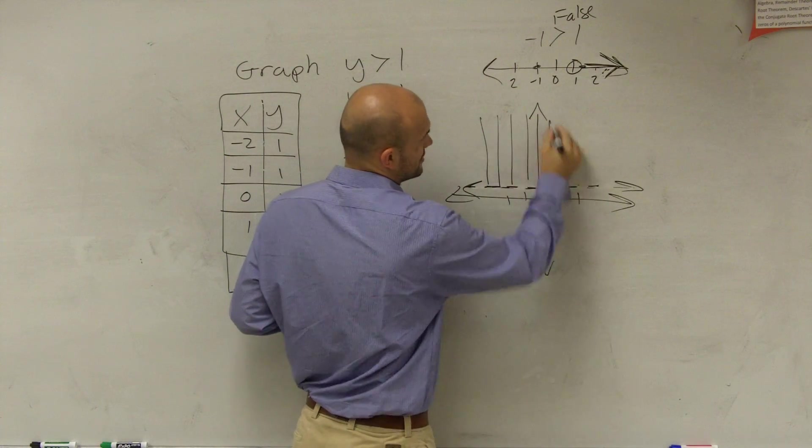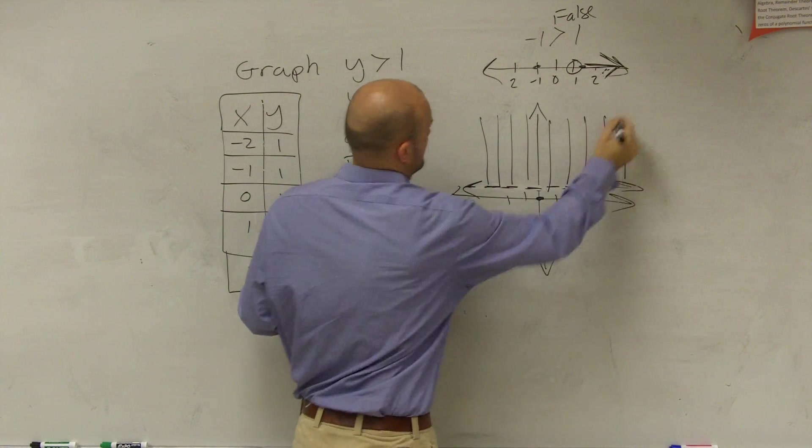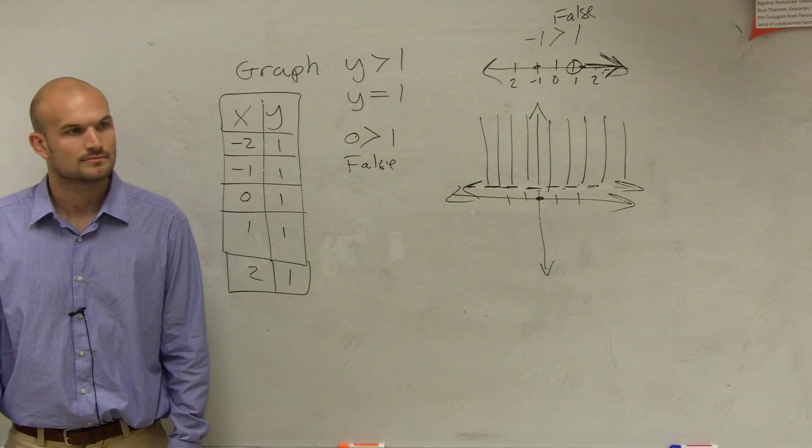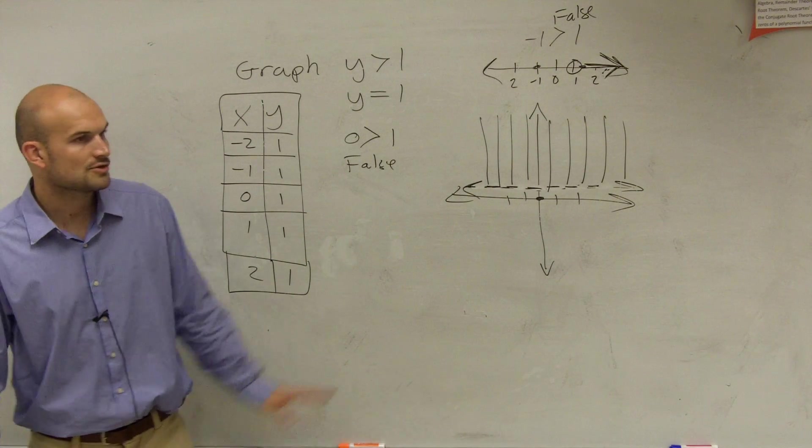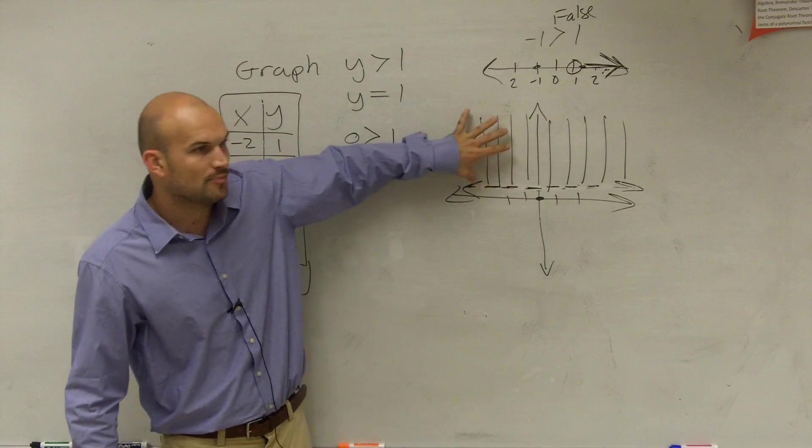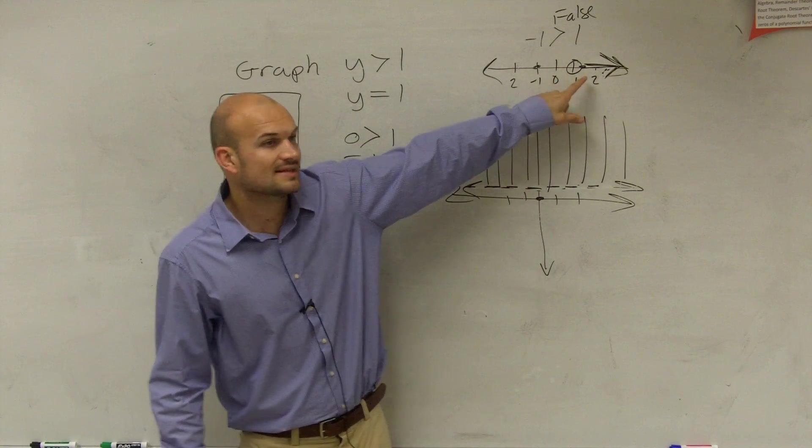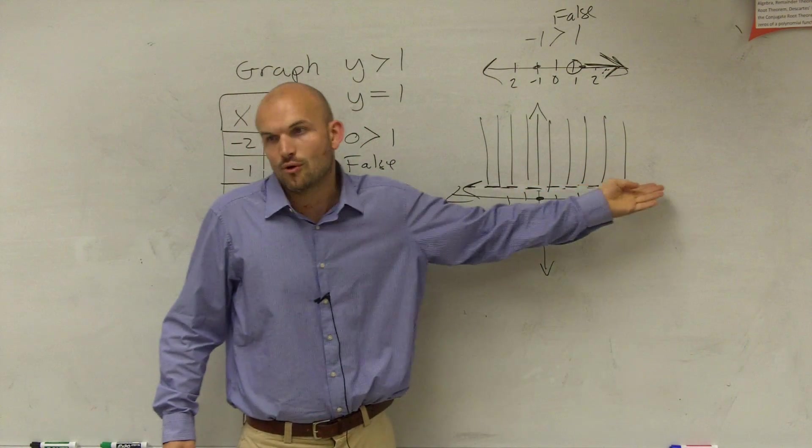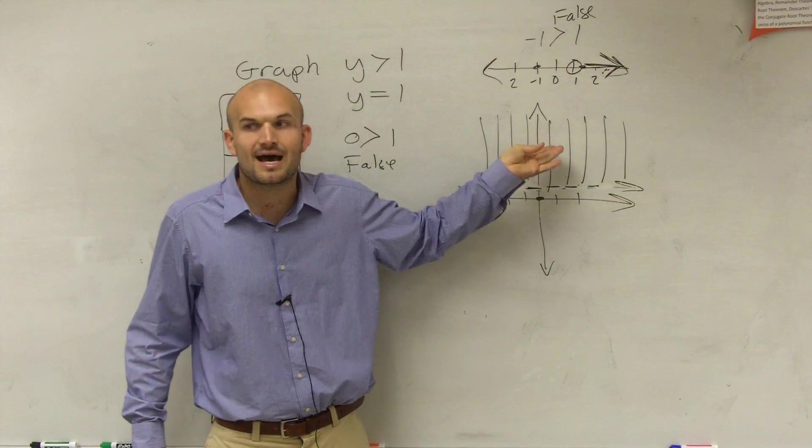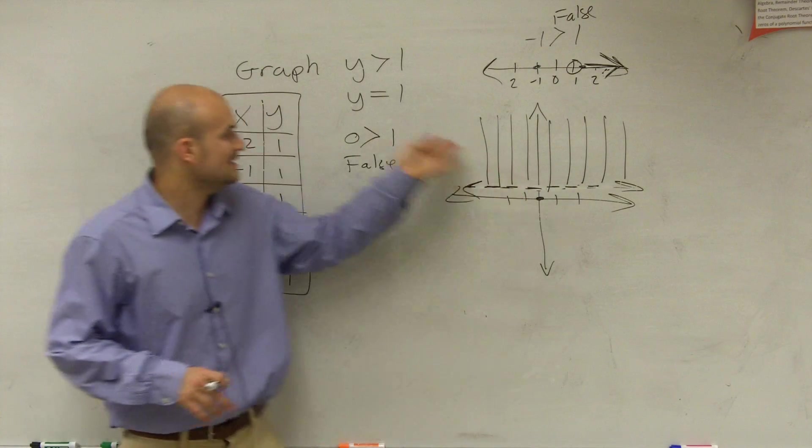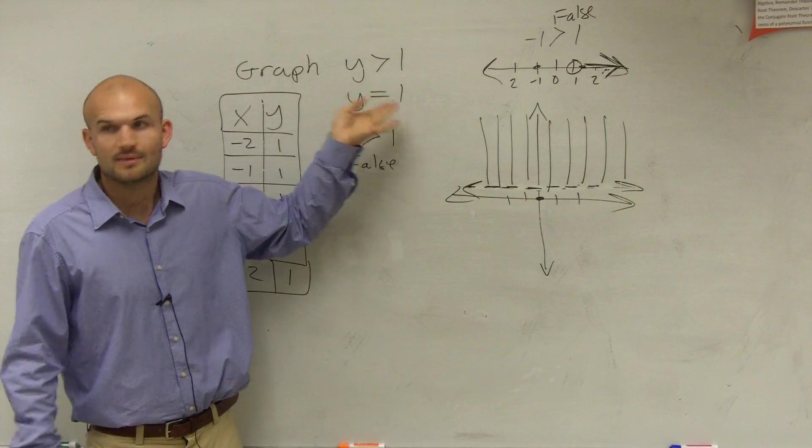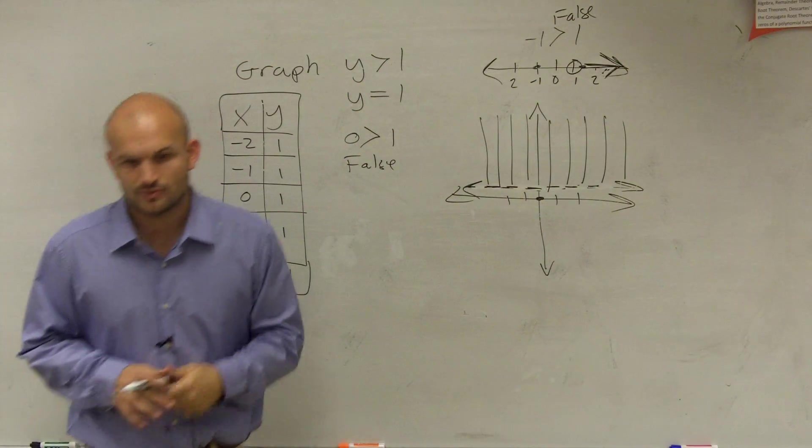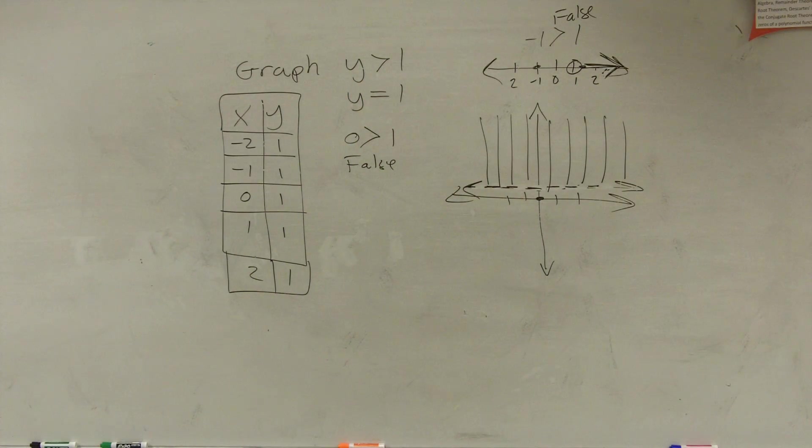And there you go. That's it. That's good. So what that means is now all the points, just like this is all the numbers on the number line to the right are true, this means all the coordinate points above this line are true. Make this inequality true, because all points are going to make that inequality true. We'll go through an example here in a second with you guys. Please put your phone away.